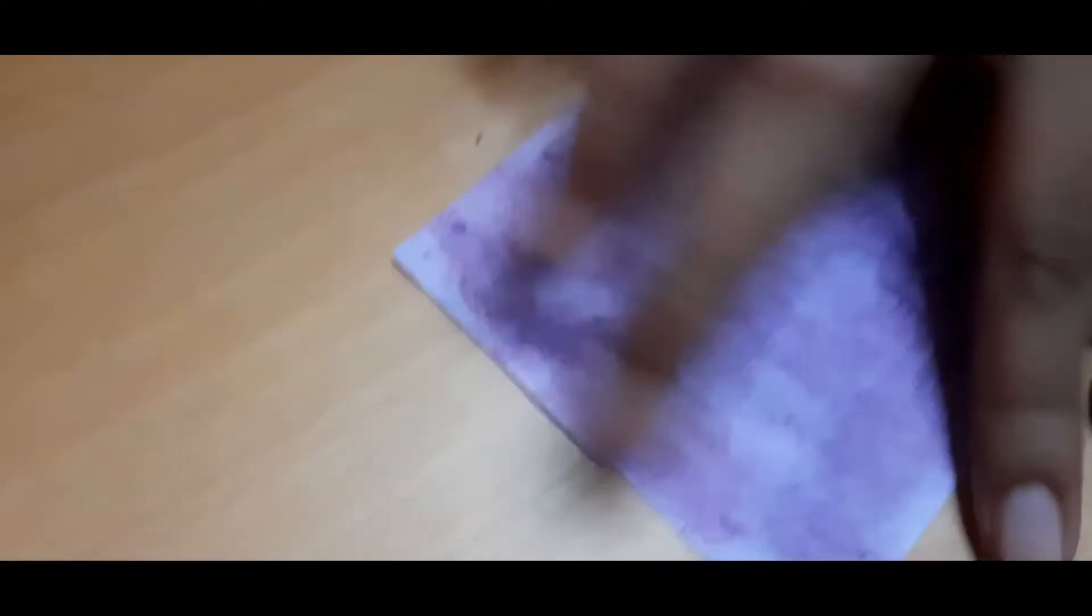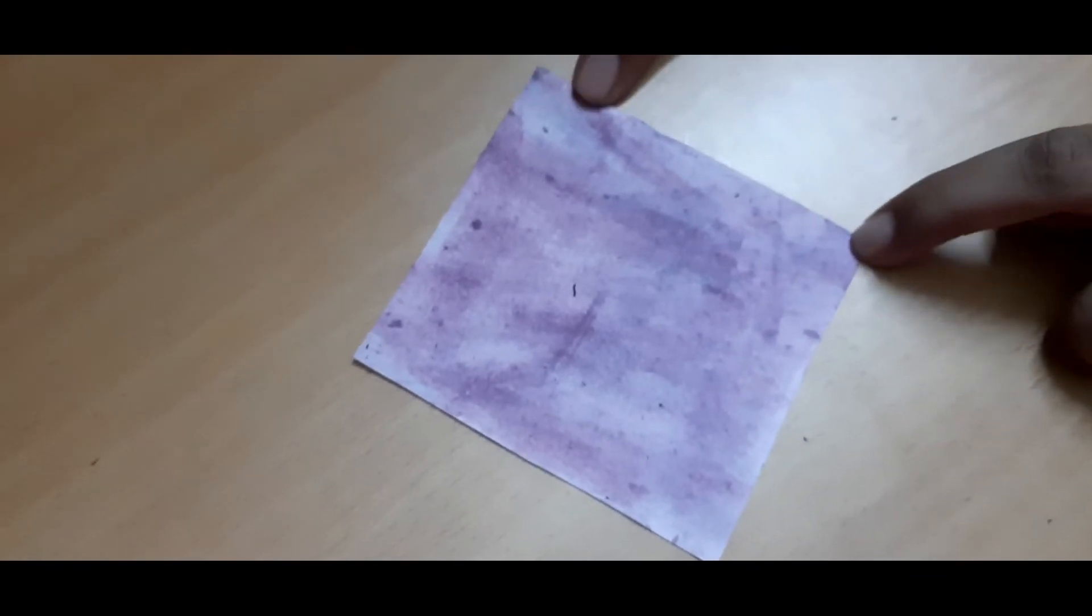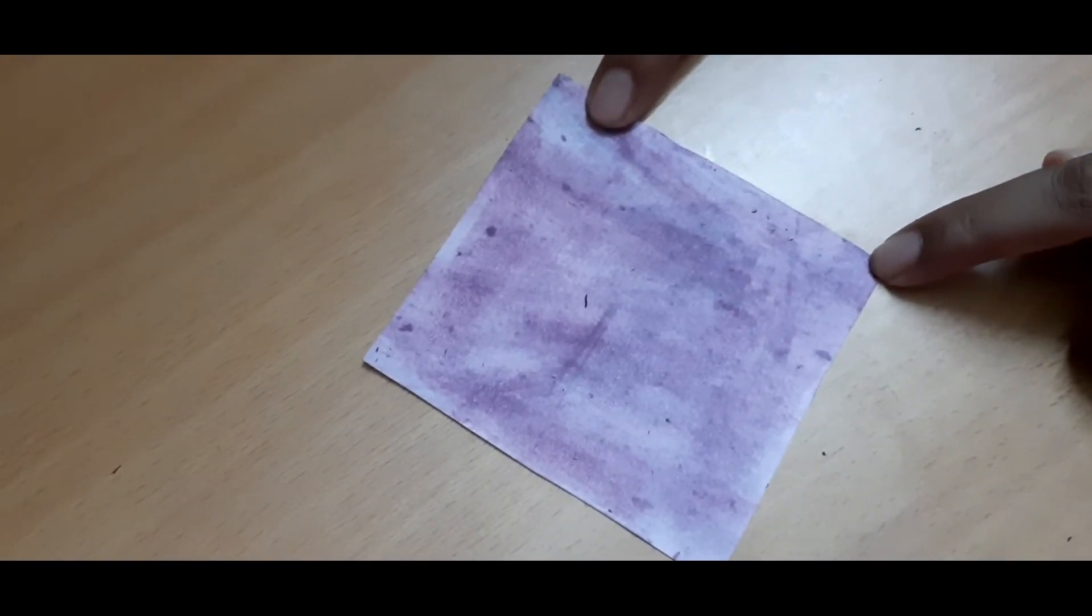After you have rubbed the hibiscus all over the paper, your paper will become like this, and your litmus paper is ready. Now let's test it on different substances. You can cut it into small strips.